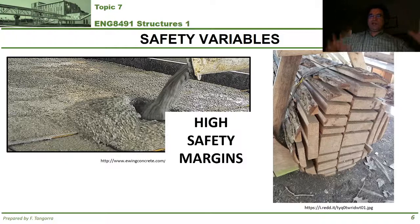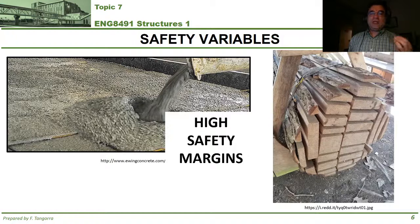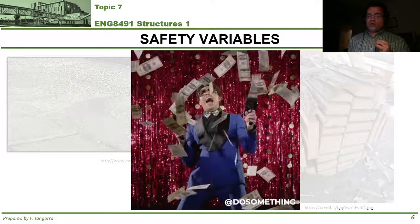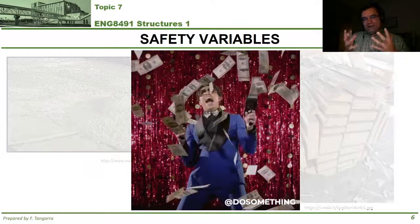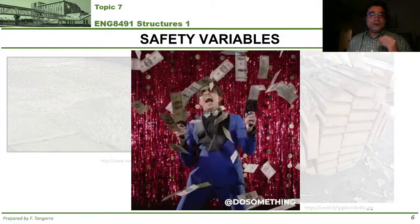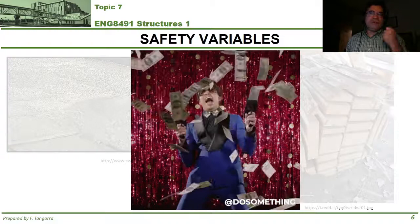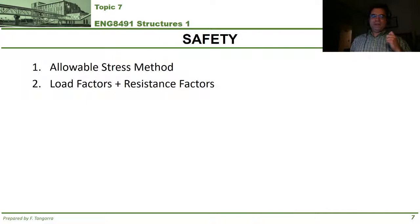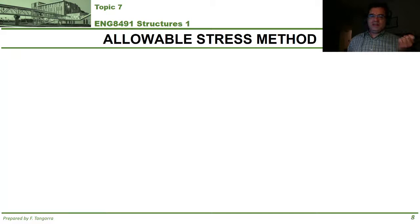However, while high safety margins are desirable, that's not reality — large or huge safety margins are not economical because they would result in very expensive structures. This relates to the informal limit states discussed previously. So how do structural engineers incorporate safety if safety margins alone are not the right approach? I'm going to cover two methods: the allowable stress method, and load factors and resistance factors.